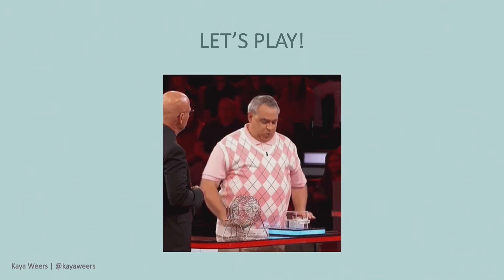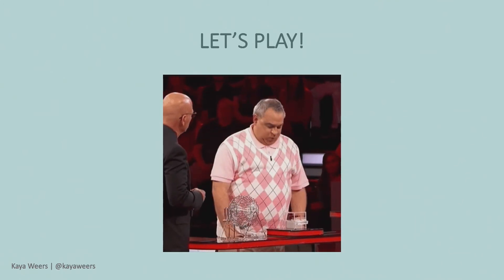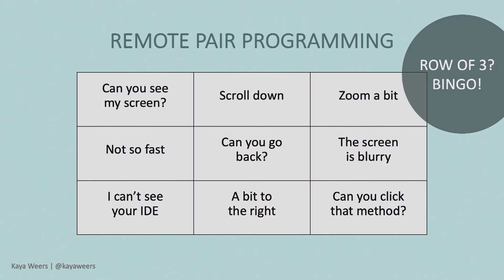It's called Bingo — I think everyone knows Bingo — and it's the remote pair programming version. You'll see here this is your bingo sheet, and it has all kinds of quotes that I've heard during a pair programming session online using screen sharing, so with tools like Teams, Zoom, or whatever. You're going to check if you've heard those quotes, and if you have a row of three in any direction, you have a bingo. "Can you see my screen?" is now the standard quote you've heard before every session, and unfortunately it's still necessary sometimes.